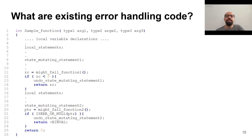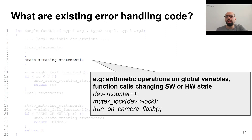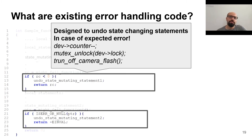Our idea to undo the in-flight system call is to reuse existing error handling code in the kernel. The following example is a sample pseudocode for a function in the kernel. As you can see, there are some local statements — arithmetic operations on local variables or function calls which do not change the state of software or hardware. Also, we can have some state-mutating statements: operations on global variables or function calls that change the state of hardware or software. In addition, we have some functions that the developer expects to fail sometimes. Developers designed error handling code to handle these expected failures. Our main idea in this paper is to repurpose these codes to also handle unexpected errors.